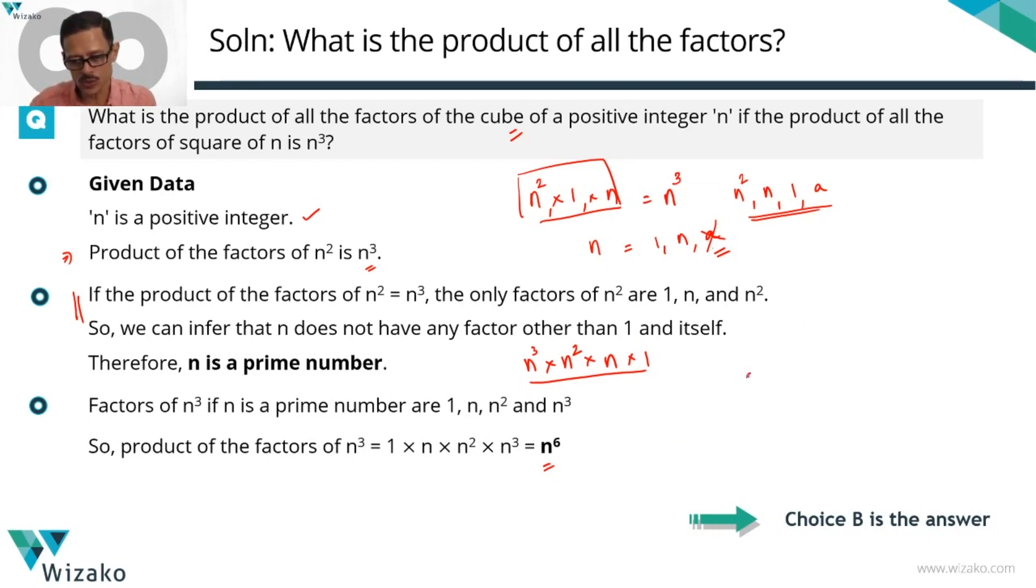If n is prime, for example, let's take 2 as a prime. What are all the factors of 2 cube then? We'll just go with the number. Factors of 2 cube will be 2 cube, 2 square, 2 and 1 because the only prime factor of 2 cube is a 2. So all the subpowers are the only possible factors for it. So product of all of these is going to be equal to 2 power 6 if n is equal to 2. In general, when n is prime, that's going to be equal to n power 6.